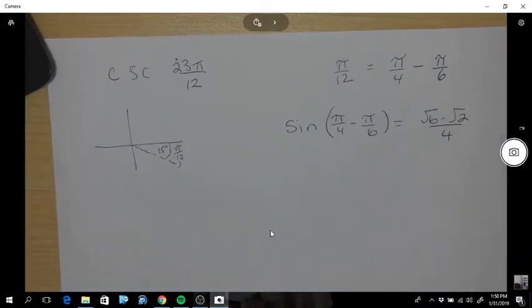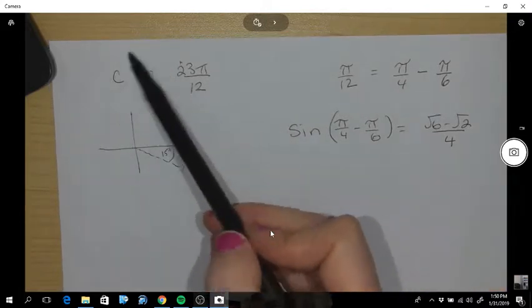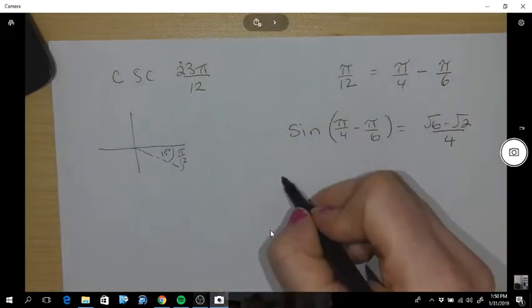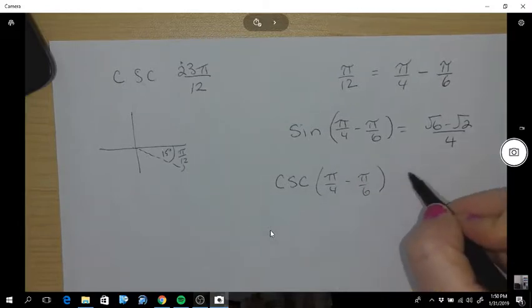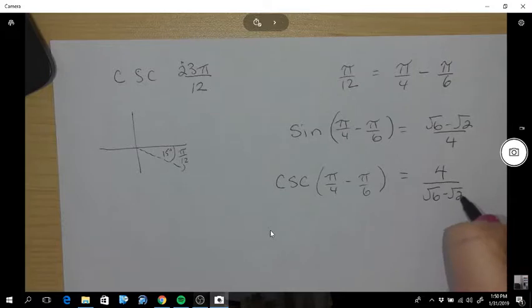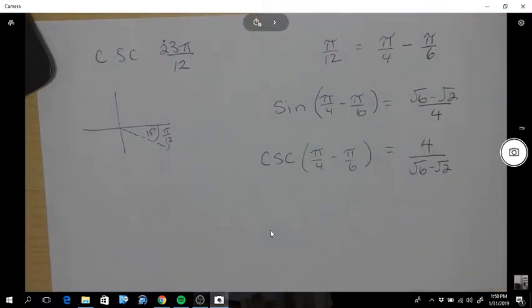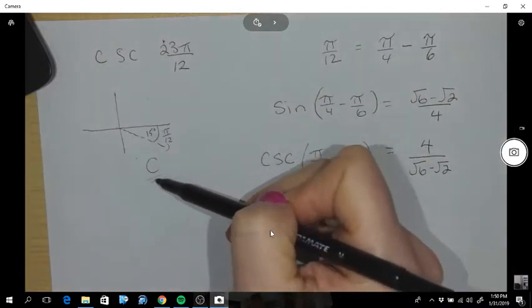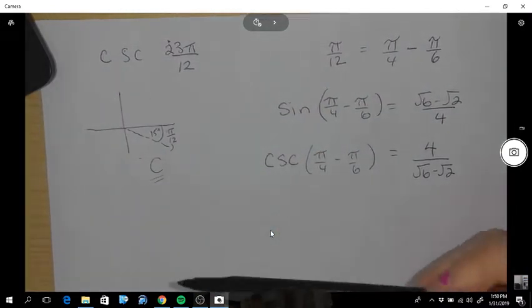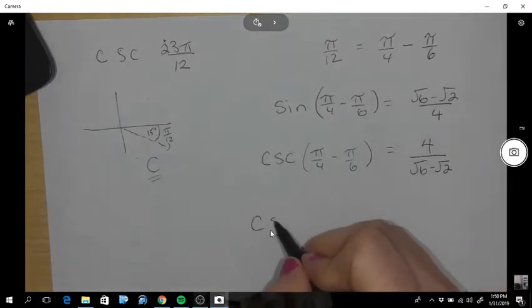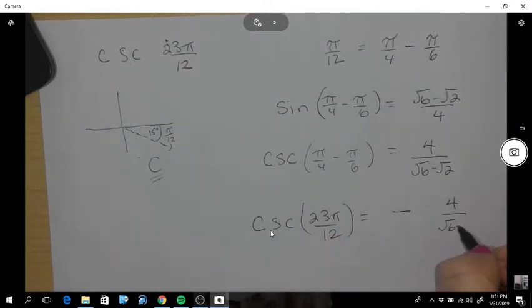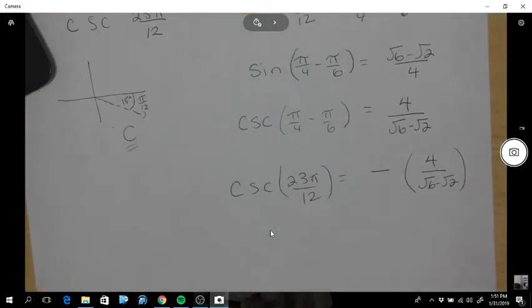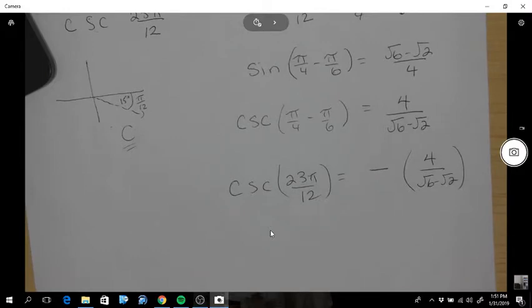Now there's two things we need to consider here. The first thing is that we're doing cosecant, so that's the inverse. So the cosecant is 4 over root 6 minus root 2. Now the other thing to consider is ASTC. You're in quadrant C, and in that quadrant the sine is negative, so now we are going to also have to negate that fraction. So there's our final answer, the negative of that fraction.